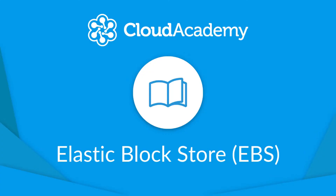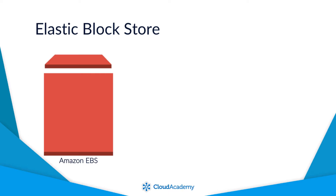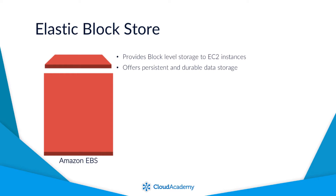Hello and welcome to this lecture where I shall be talking about EBS, which is another method of providing storage to your EC2 instances which has different benefits to that of the instance store volumes. Much like instance store volumes, EBS also provides block level storage to your EC2 instances. However, it also offers persistent and durable data storage, which is a huge plus. As a result, this offers far more flexibility for the data that you store on the EBS volume compared to what you can do with the data stored on instance store volumes.